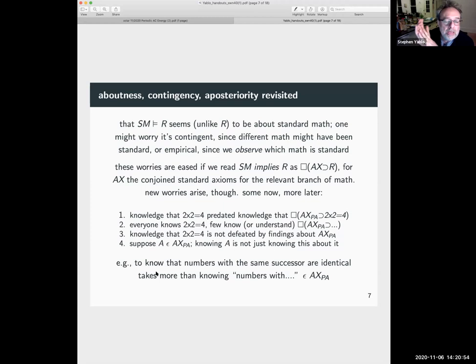Since what I've written as sm is really a definite description, standing for whatever math is actually sort of taken for granted or is relevant to the evaluation of r. Well, different math might have been standard. And so there's an element of contingency. And you might also think that there's something empirical here because it takes experience to realize that this math is standard as opposed to that math.